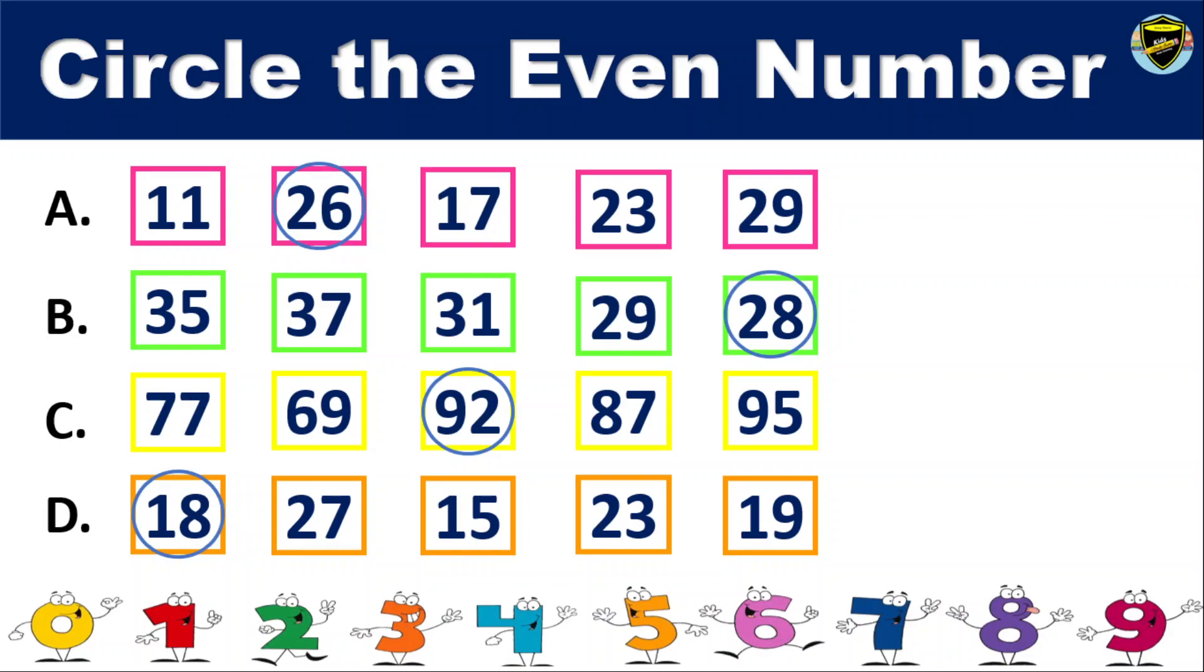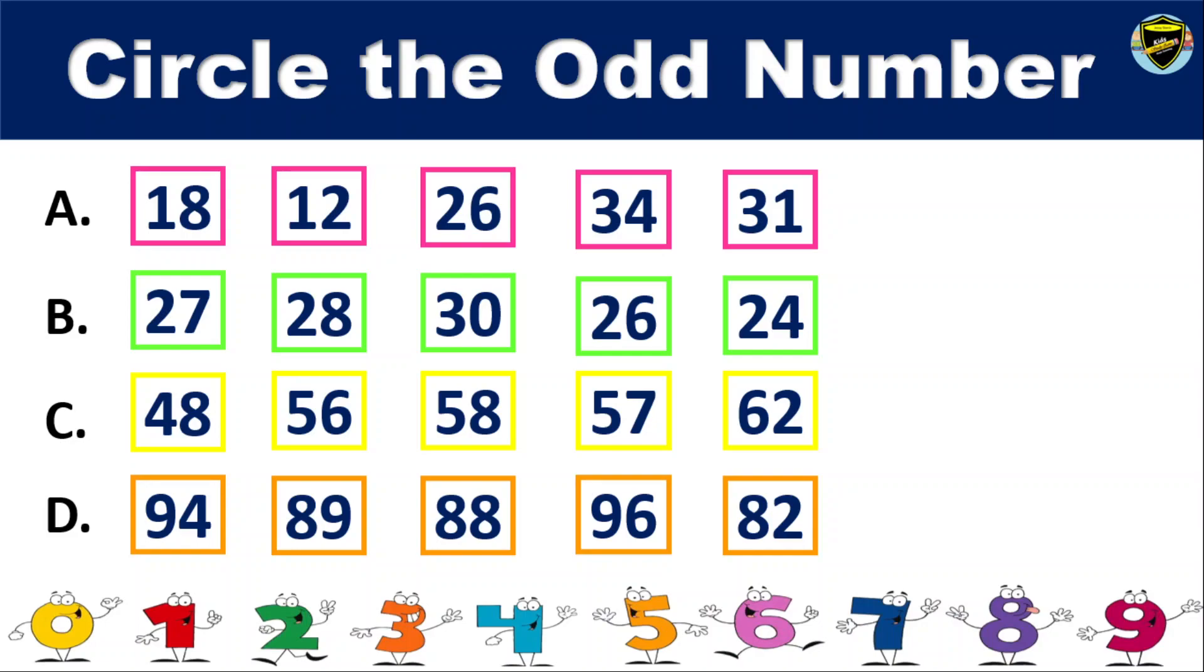Now you have one more exercise. Here you need to circle the odd number. A. 18, 12, 26, 34, 31. The correct answer is 31.